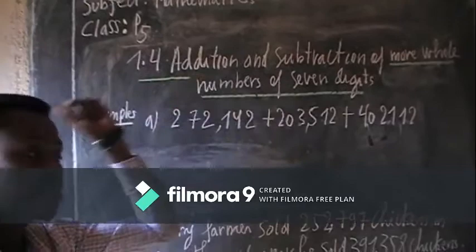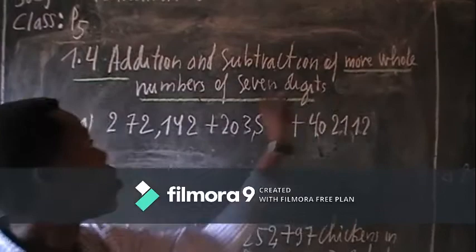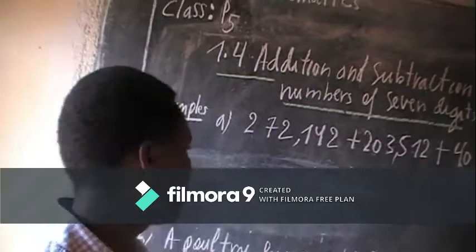Hello everybody, I'm called teacher Boni. Today I'm going to teach mathematics. Class is Primary 5. Today I'm going to focus on addition and subtraction of large numbers of 7 digits.